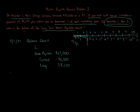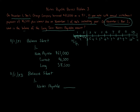On the balance sheet at November 1st, Year 3, under the liabilities section, the total notes payable is $6,500 times 8. The current portion is $6,500 — just the one payment due between November 1st, Year 3 and November 1st, Year 4. The long-term portion is $6,500 times 7, which equals $45,500.